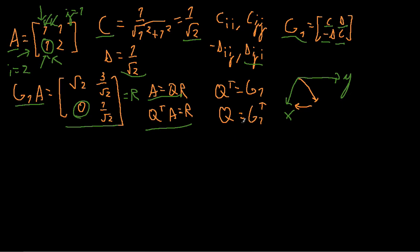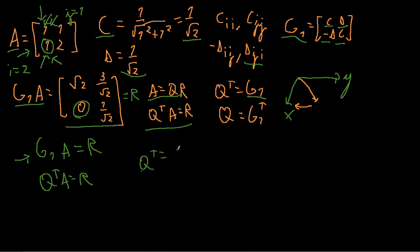To find Q, remember that A equals QR, and Q-transpose times A equals R. So Q-transpose equals G1, meaning Q equals G1-transpose. We already found R before.